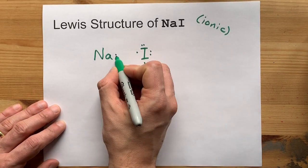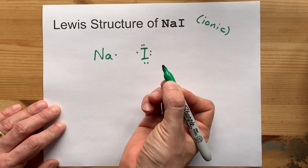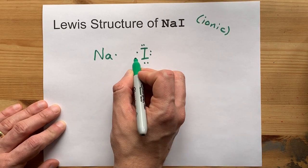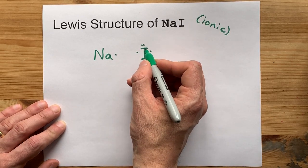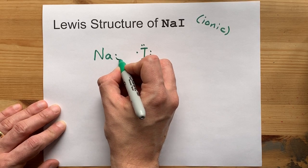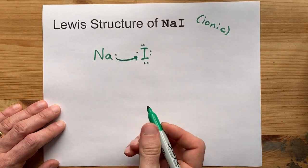Now, the sodium is a metal and wants to give away its electrons to something more electronegative, like a non-metal. So, that one electron is going to move from sodium to iodine.